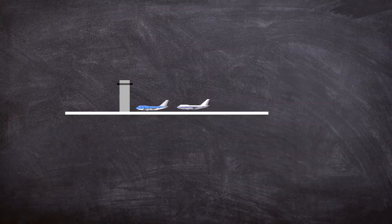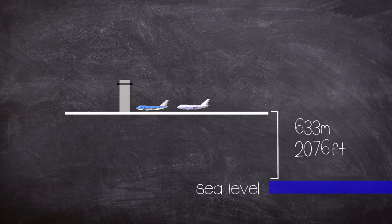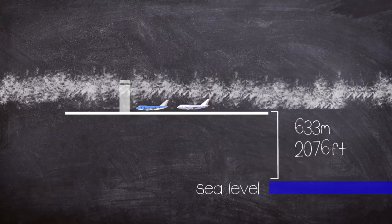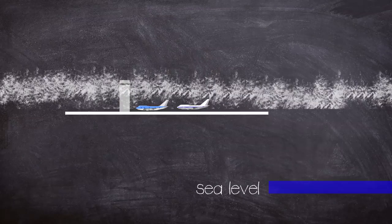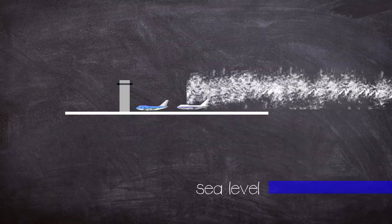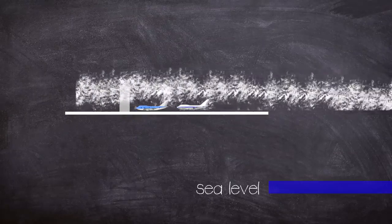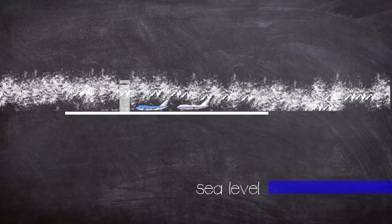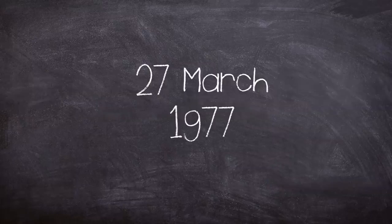Tenerife airport is at 633 metres above sea level. This has an unusual side effect. Clouds at 600 metres above ground level at the nearby coast are at runway level at Los Rodeos. With clouds being blown in from the sea, this creates variable visibilities where clear visuals one minute can almost instantly drop below minimums the next. And the 27th of March was just such a day.